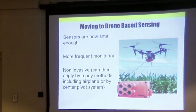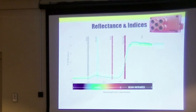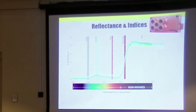Using a drone avoids problems like crop damage from driving through the field. It's cheaper, non-invasive, and allows more frequent measurement. We're directly measuring the nitrogen content of the corn plant indirectly. We look at five different wavebands, but the important one is the red band. The red band directly relates to chlorophyll content, which you can then relate to nitrogen content.